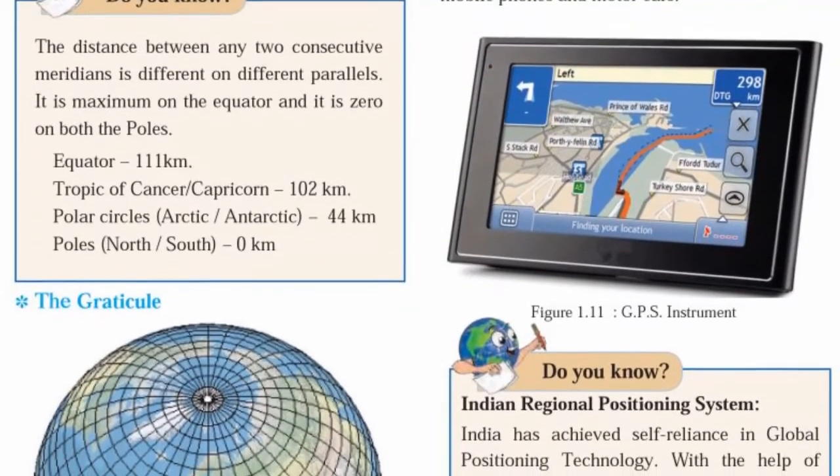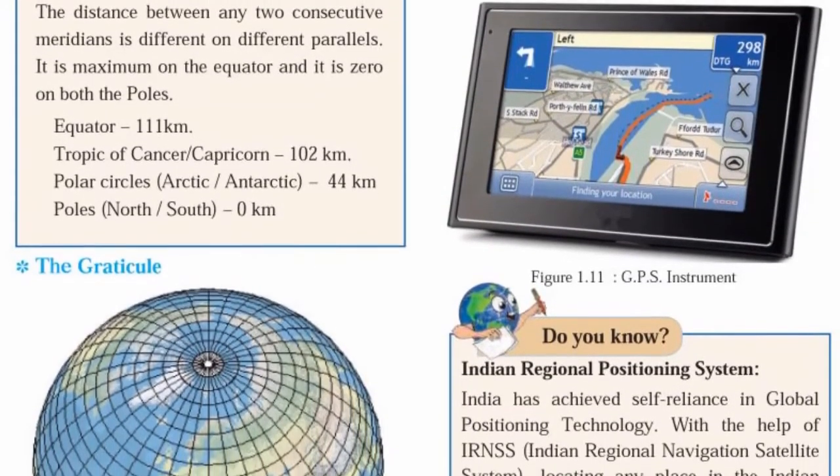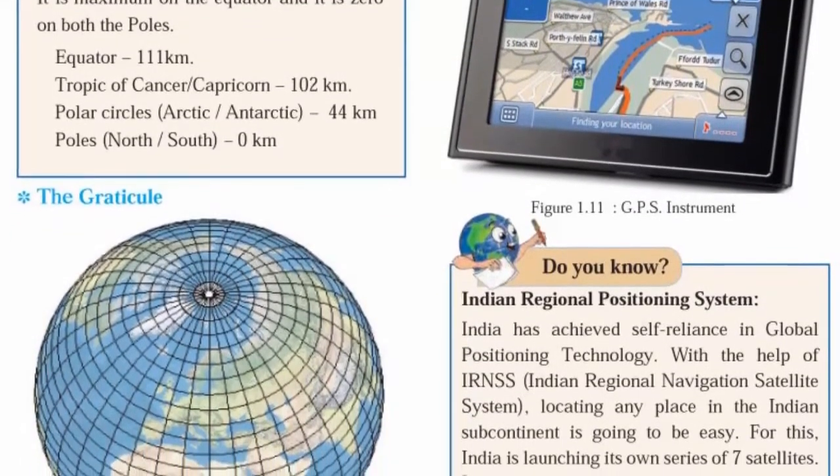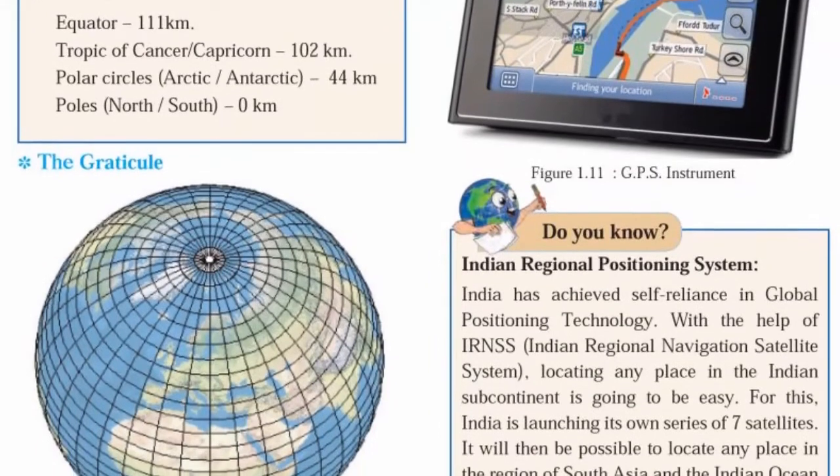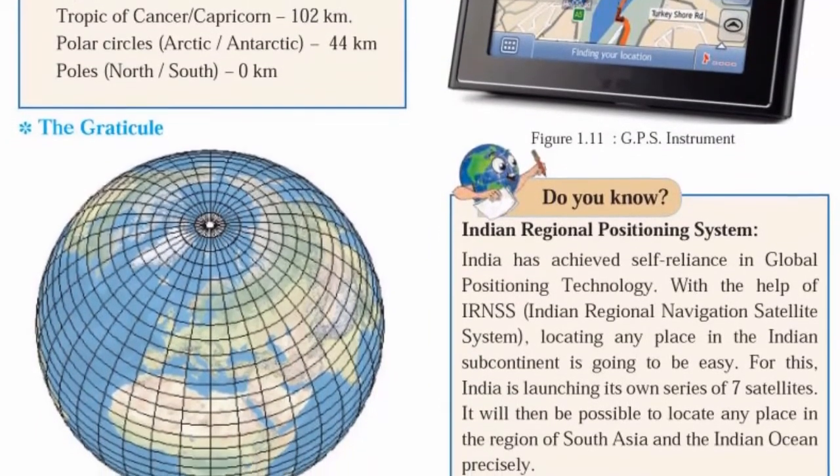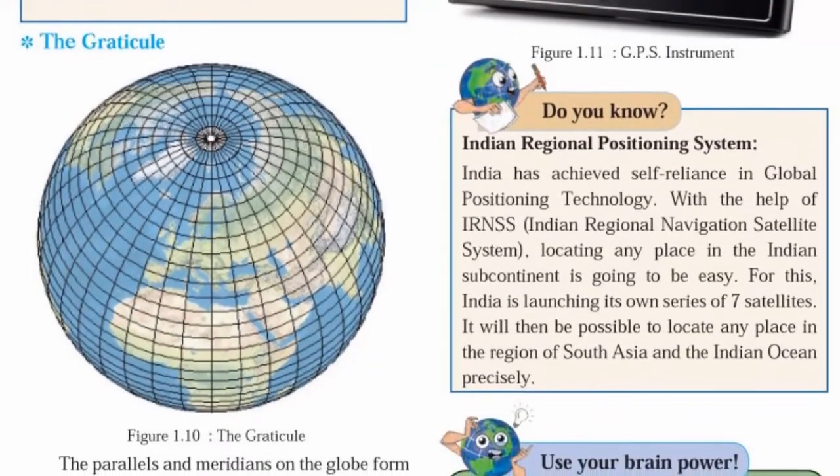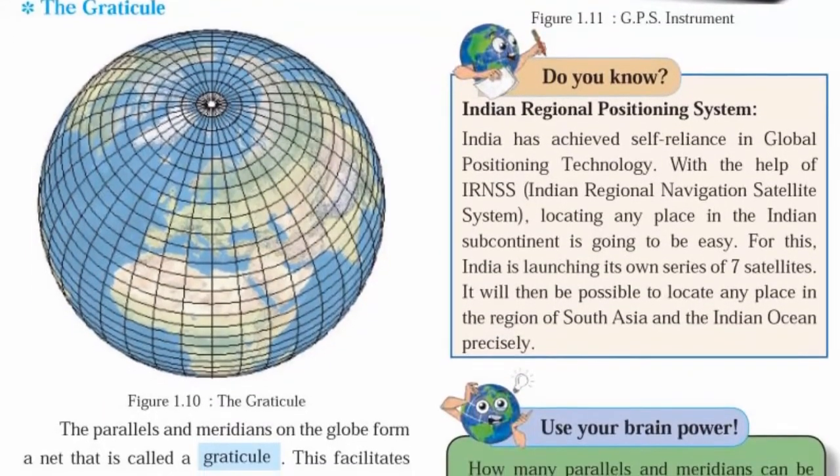The graticule. The parallels and meridians on the globe form a net. This net is called a graticule. A graticule facilitates determining the location of a place on the earth.